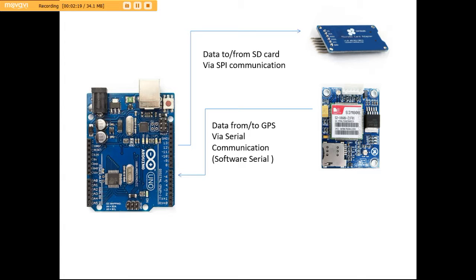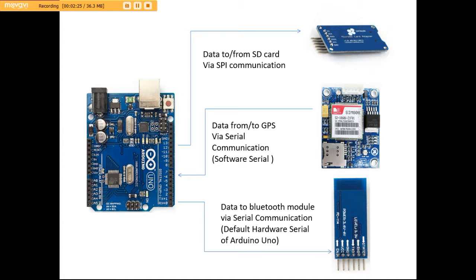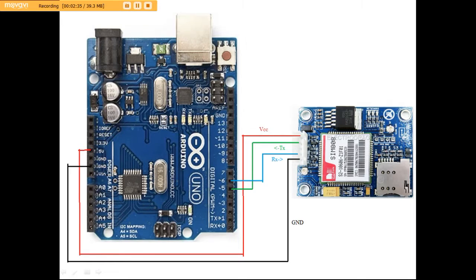The result of the program can be seen via Bluetooth module in a mobile device and the communication will be serial communication. We have used the default hardware serial pins of Arduino to be connected to the Bluetooth. Here we are seeing the connection of the GPS module to the Arduino. We have connected pin 5 of the Arduino to the TX pin of the GPS module, and pin 6 of the Arduino to the RX pin of the GPS module.